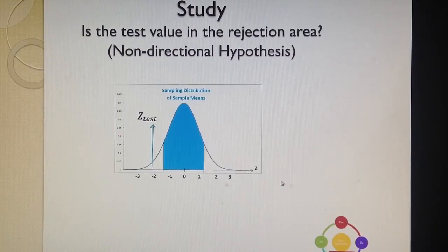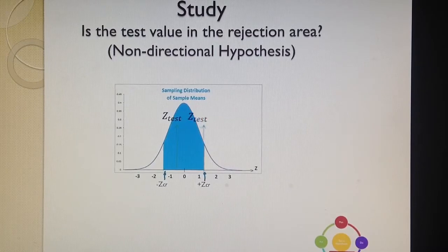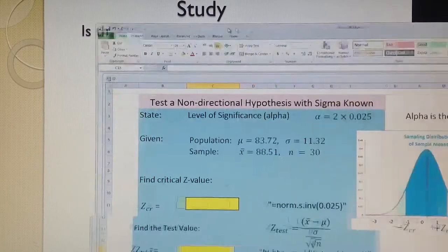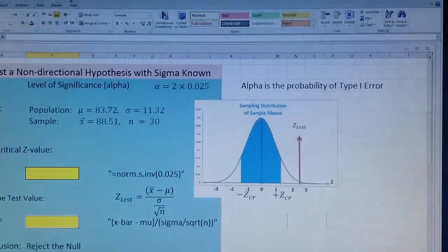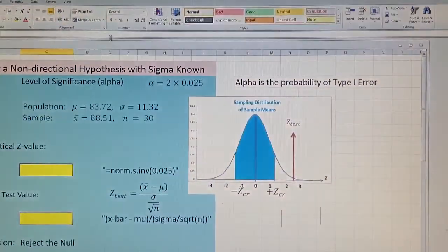So how will I test the null hypothesis? Well, after I calculate the Z test, I will look whether this Z test is less than Z critical as an absolute value, or in the critical area, or in the area of rejection on the other side. And now let's see how I can do this with Excel.